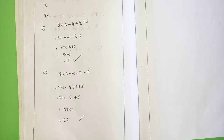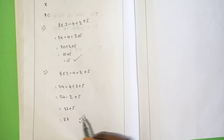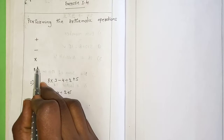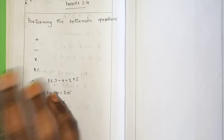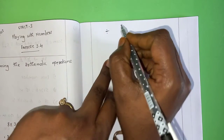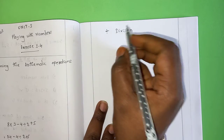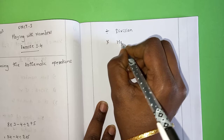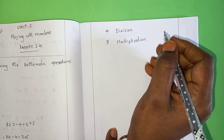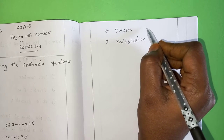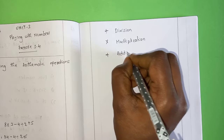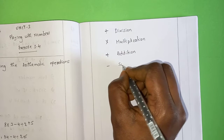The correct answer is 27; 15 is the wrong answer. Why? Because we do have four different types of arithmetic operations, and out of these operations, division has the highest priority. After division, multiplication has the second highest priority. You can also say division and multiplication have the same priority. Then comes addition, and lastly subtraction.